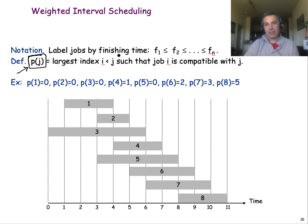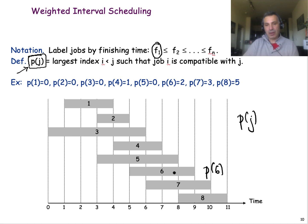Suppose we have already sorted the jobs based on finish time and labeled them accordingly. So job 1 has the lowest finish time and the last job has the latest finish time. P(J) is the largest index of a job that is compatible with J. For instance, what is P of job 6? Job 5 is not compatible with 6, job 4 is not compatible with 6, job 3 is not compatible with 6, but job 2 is compatible with 6. So P(6) = 2, the largest job index still compatible with job 6.